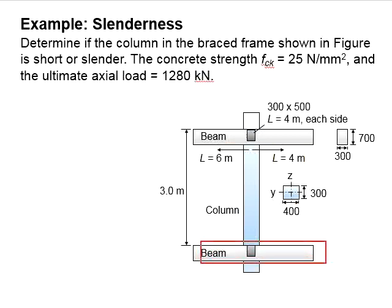Same goes for the other story. There are incoming beams. The beam size is 300 times 500 and the beam length is 4 m on each side of the column. You are asked to go through a series of calculations to determine the effective height of the column, and then to determine the slenderness ratio and check against the slenderness limit in order to determine whether the column is short or slender.